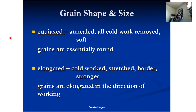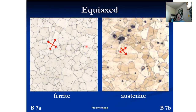I'll show images later in this class of dislocation arrays that have formed themselves into a honeycomb-like structure — very cool. We have equiaxed grains and elongated grains. Typically we associate elongation with cold working. When you cold work something, you make it harder and stronger. Grains are elongated in the direction of working. So equiaxed grains we typically think of as softer — essentially round. How do we determine if a microstructure is equiaxed?